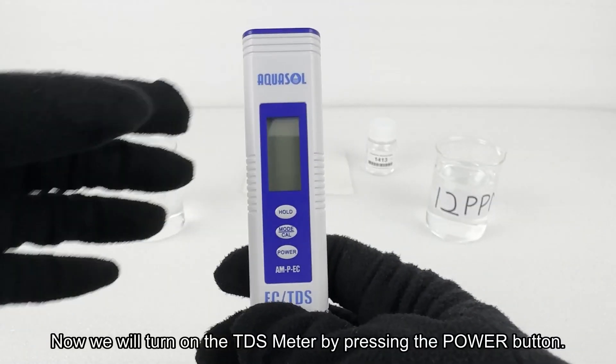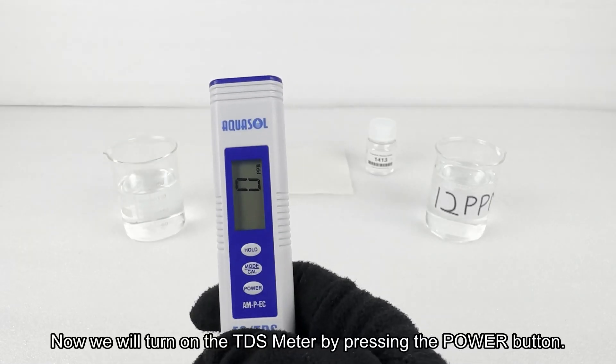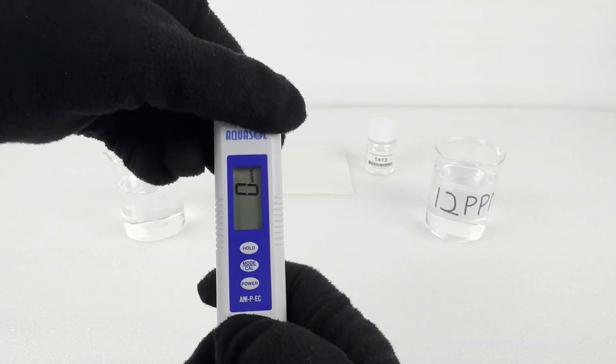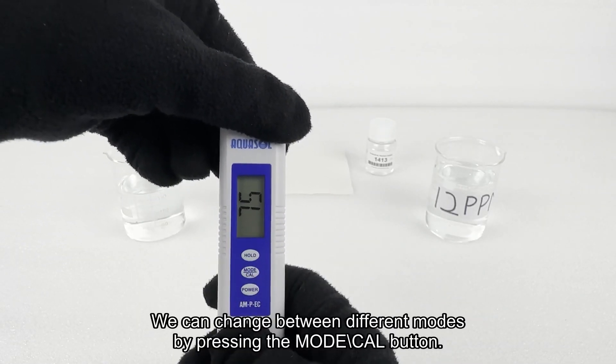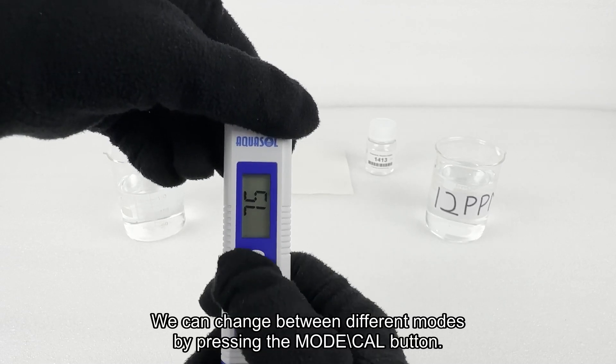Now we will turn on the TDS Meter by pressing the power button. We can change between different modes by pressing the mode backslash CAL button.